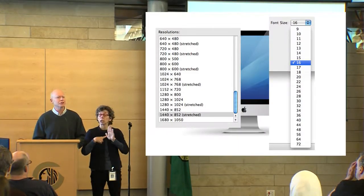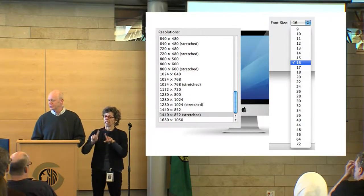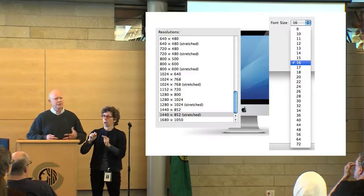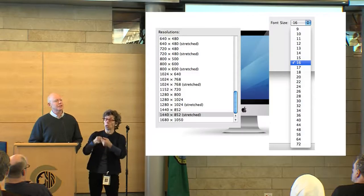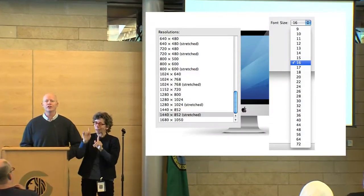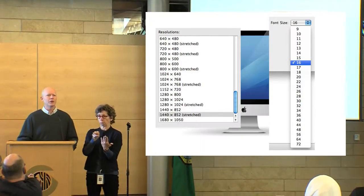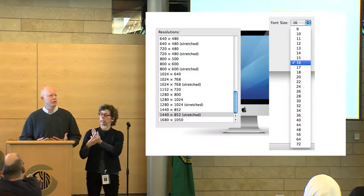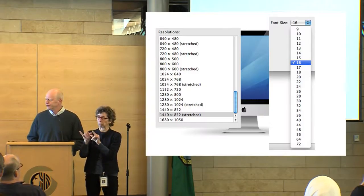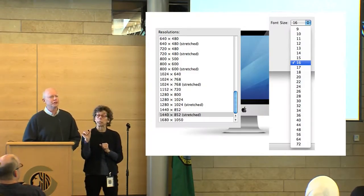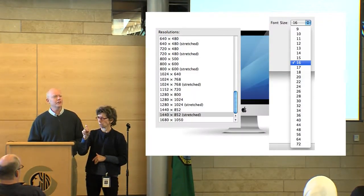Even those of us who access content visually using a monitor have a wide range of differences. Here's a screenshot showing screen resolutions from my MacBook Pro — anywhere from 640 by 480 to 1680 by 1050. There are lots of different shapes and sizes, stretched and not stretched, with over a dozen different choices for configuring how the computer looks in terms of display size, font size, and icon size.